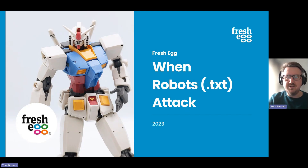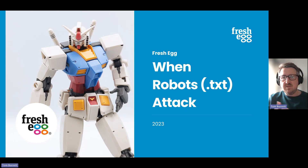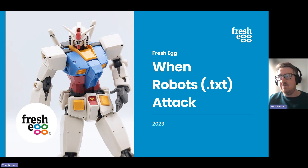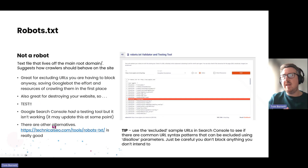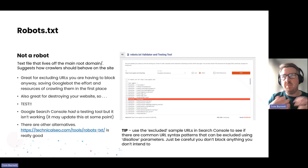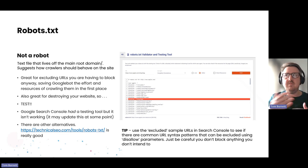Hi, welcome to another Fresh Egg short. Today we're going to be looking at robots.txt. What is robots.txt? It's a text file that lives off the main root domain and it suggests how crawlers should behave on a site. It's great for excluding URLs that you want to block, saving Googlebot the effort and resource of crawling them in the first place.